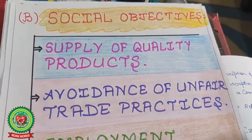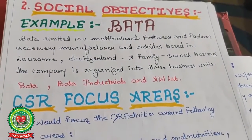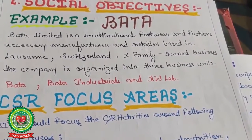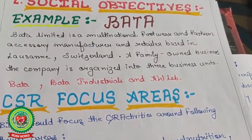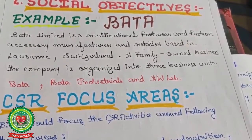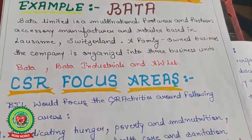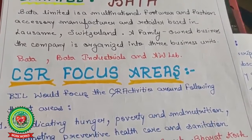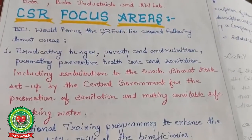Before explaining those points, let's look at one example — the company Bata. Bata Limited is a multinational footwear and fashion accessory manufacturer and retailer based in Lausanne, Switzerland — a family-owned business organized into three business units: Bata, Bata Industrials, and AW Lab. CSR here means corporate social responsibility.